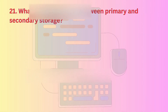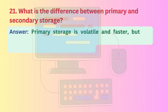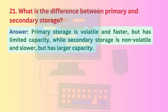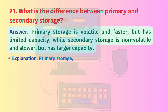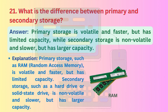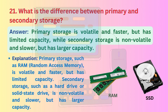Question 21: What is the difference between primary and secondary storage? Primary storage is volatile and faster but has limited capacity, while secondary storage is non-volatile and slower but has larger capacity. Primary storage, such as RAM (random access memory), is volatile and faster but has limited capacity. Secondary storage, such as a hard drive or solid-state drive, is non-volatile and slower but has larger capacity.